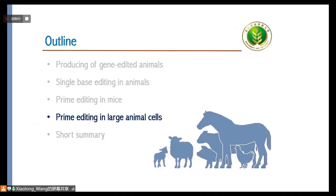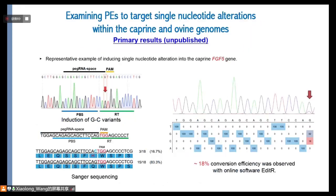Next, we want to apply this method in large animals. Since large animals take much longer to work with, we hope to get our prime-edited animals early next year. First, we tried whether prime editing works in vitro by selecting up to 10 gene targets in cells from either sheep or goats. The targeting efficiency was around 18% in our sheep and goat cells.